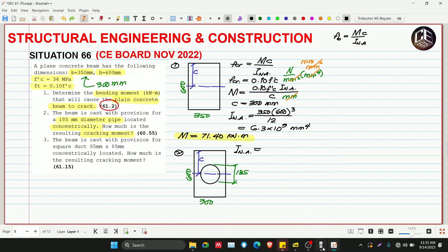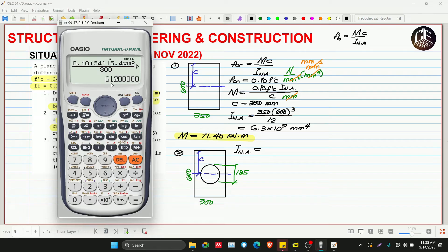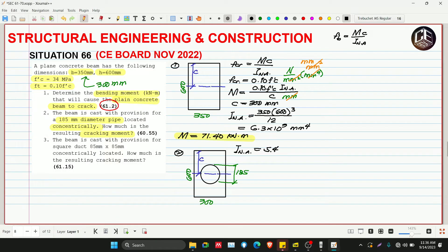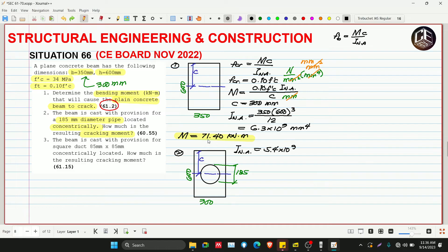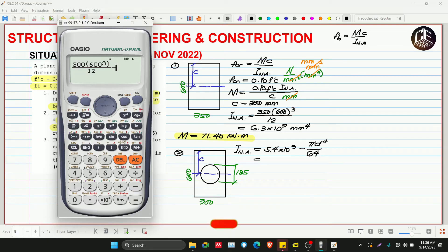The diameter is 185 millimeters. What will we do? Will anything change in the equation? No, the equation is the same. What will change is our INA because it's hollow. Before, our INA - we can use the previous one with 5.4. This is 300, so 5.4 times 10 raised to 9. That's the solid part. Then we subtract the moment of inertia of the hollow part. The moment of inertia of a circle is pi d raised to 4 over 64.